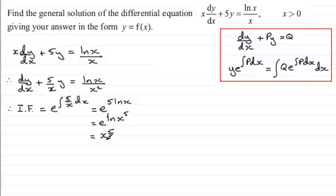So now we've worked out e to the integral p dx, we can substitute it into this equation. And so therefore what we've got is y x to the power 5 equals the integral of q. Now q remember was ln(x) over x squared. So we've got ln(x) all divided by x squared, and then this is multiplied by our integrating factor x to the power 5, and we're integrating with respect to x. So this tidies up. We've got the integral of x cubed ln(x) dx.